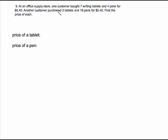At an office supply store, one customer bought seven writing tablets and four pens for $6.40. Another customer purchased two tablets and 19 pens for $5.40. Find the price of each. So our variables here are talking about the price of something, not the number of tablets and pens sold. The price. So the price of a tablet we don't know, that is T. The price of a pen we don't know, that is P.